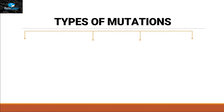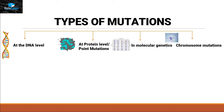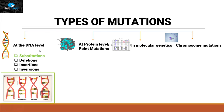Now, types of mutation. Mutations can be categorized into four different types. The first type is at the DNA level. The second type is at the protein level and is also called point mutations. The third category is in molecular genetics and the fourth one is called chromosome mutations. At the DNA level, we have further subtypes: substitutions, deletions, insertions, and inversions.